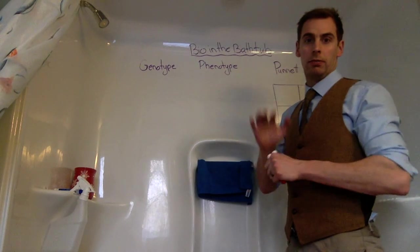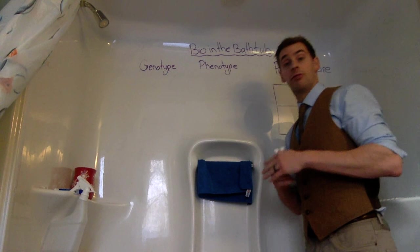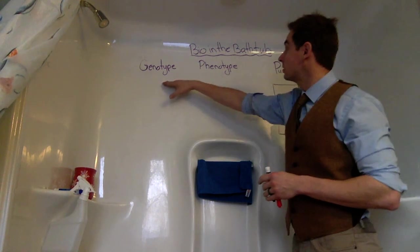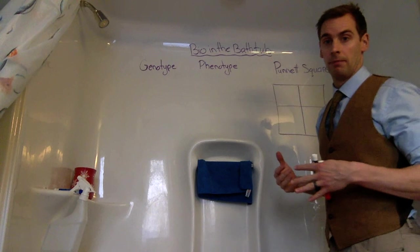Hey, welcome to Bio in the Bathtub. I'm Mr. Oko. Today we're going to very briefly do a five-minute overview of genotype, phenotype, and how we can solve that using a Punnett square.